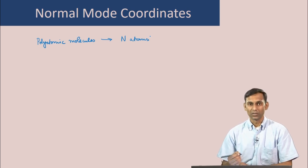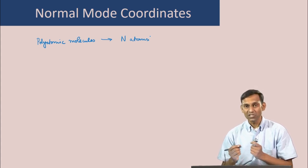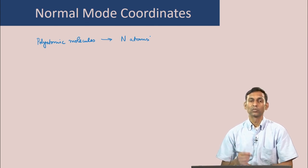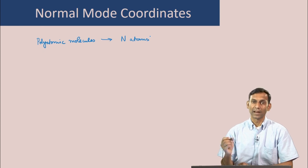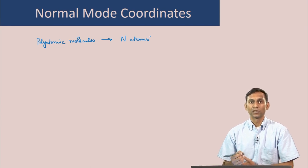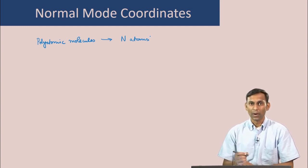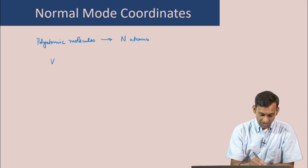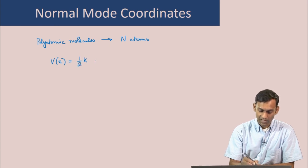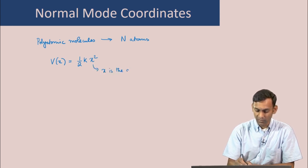In the case of diatomic molecules, that is when there are just 2 atoms, we have seen in a previous lecture that the vibrational motion of the 2 atoms is equivalent to the vibration of a single particle connected with a spring and performing simple harmonic motion. The particle moves with a potential energy which is quadratic in the displacement: V(x) = ½kx², where x is the displacement from the equilibrium position.